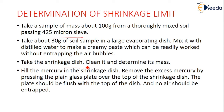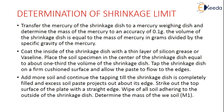Remove the excess mercury by pressing a plain glass plate firmly over the top of the shrinkage dish so no air is trapped. Transfer the mercury to a weighing dish and determine its mass to an accuracy of 0.1 gram. The volume of the shrinkage dish equals the mass of mercury in grams divided by the specific gravity of mercury. Then coat the inside of the shrinkage dish with a thin layer of silicone grease or vaseline, and place the soil specimen in the center, filling only about one-third of the volume.